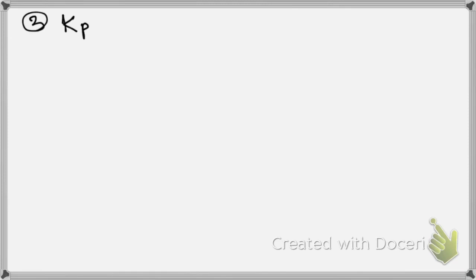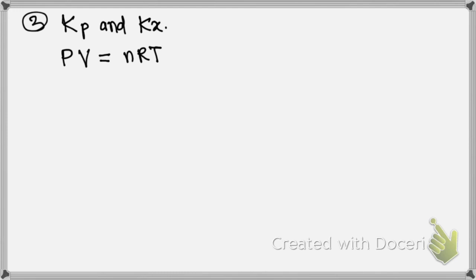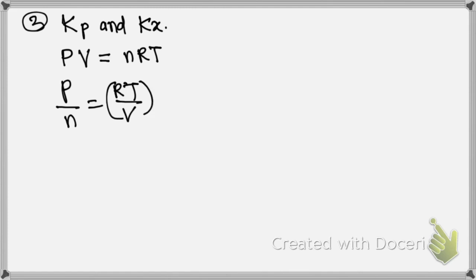Now let us go to the second part: the relationship between Kp and Kx. For that, we use the ideal gas equation PV equals NRT, or P divided by N equals RT divided by V.